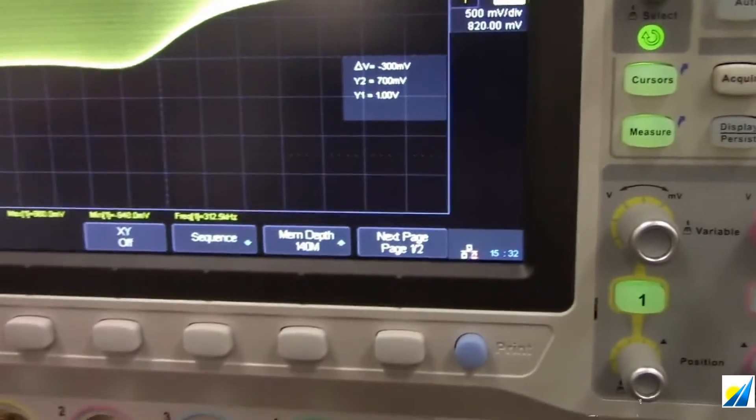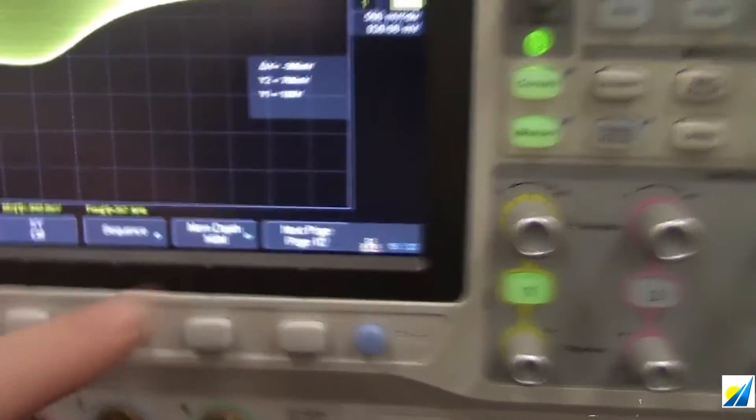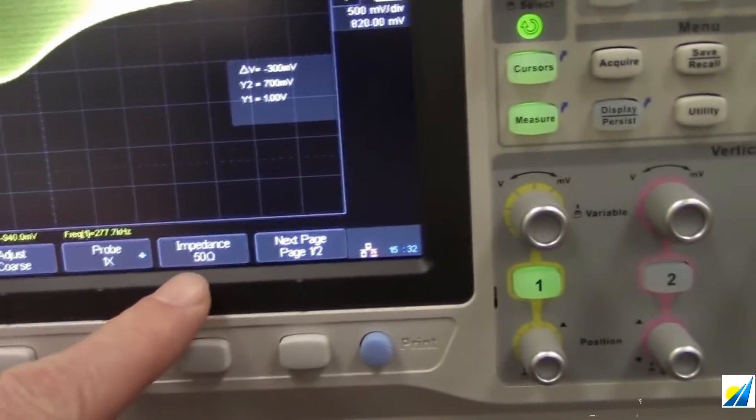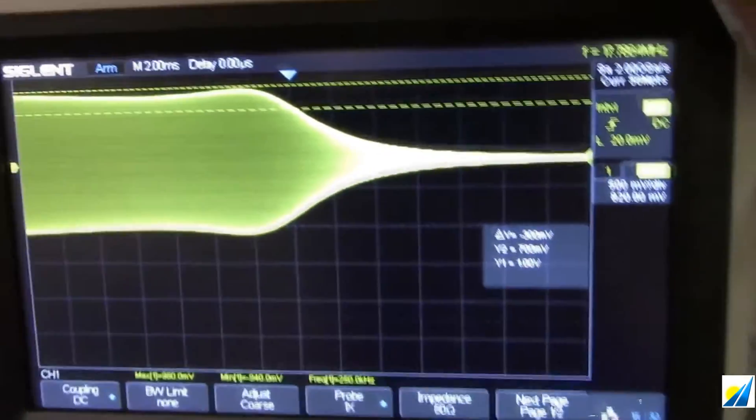Again, I should let you know, acquire. So pressing the acquire key here is going to give us access to the deeper memory. So we want to set it to the maximum memory depth. Because we're dealing with a 50 ohm system with this oscilloscope, we also want to set the input impedance for that channel to 50 ohms. Again, I got there through the channel 1 button.